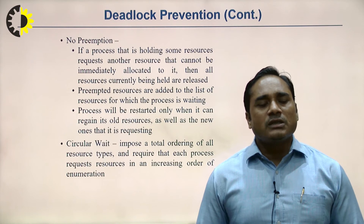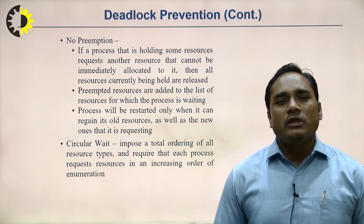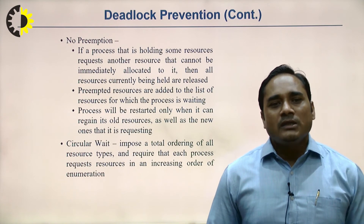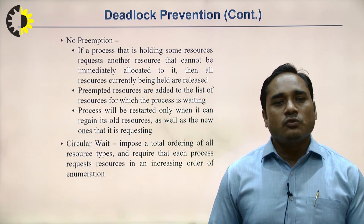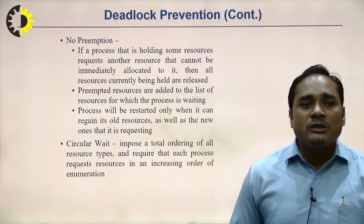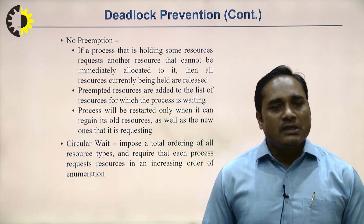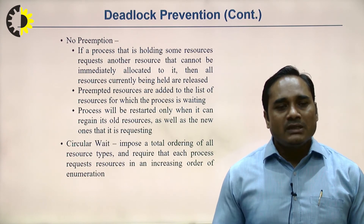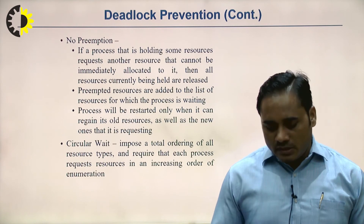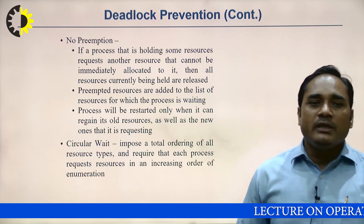For no preemption in deadlock prevention: if a process holding resources requests another resource that cannot be immediately allocated, all currently held resources are released. For circular wait prevention, a total ordering of all resource types is imposed, requiring each process to request resources only in increasing order of enumeration. Avoiding all four deadlock conditions prevents the system from entering deadlock.